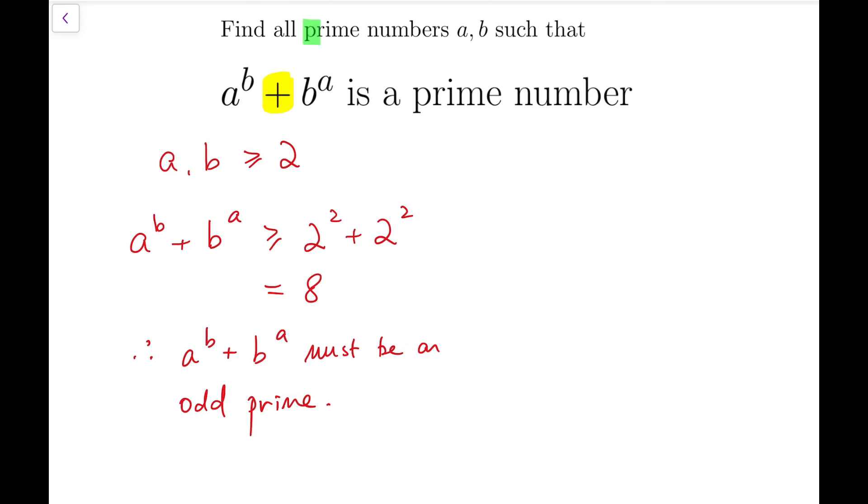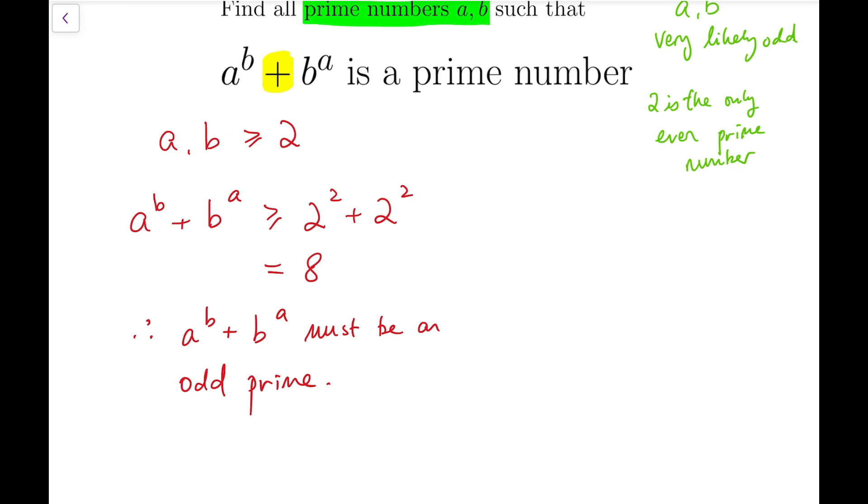Now, this is useful because we know that for prime numbers, given that it's a prime number, A and B are very likely to be odd. Because prime numbers are either odd or exactly 2. 2 is the only even prime number. And we were told that one of the powers is odd.